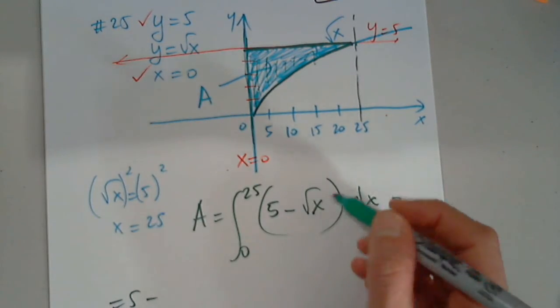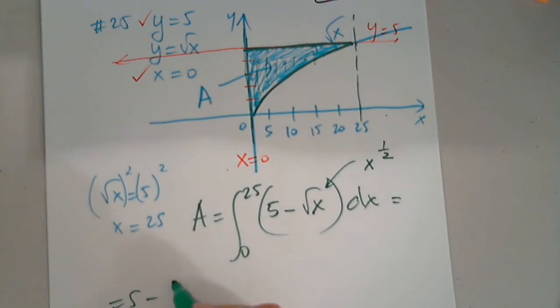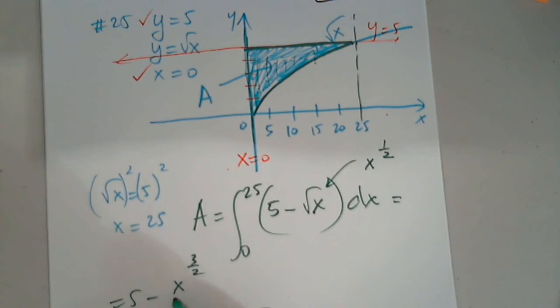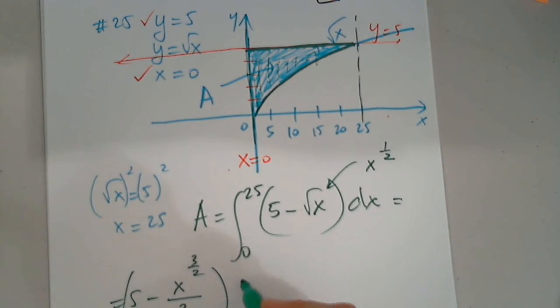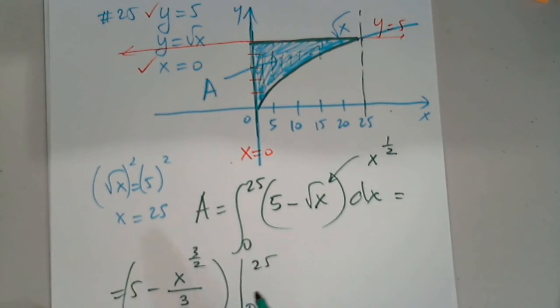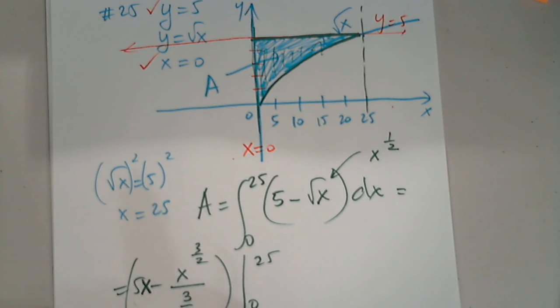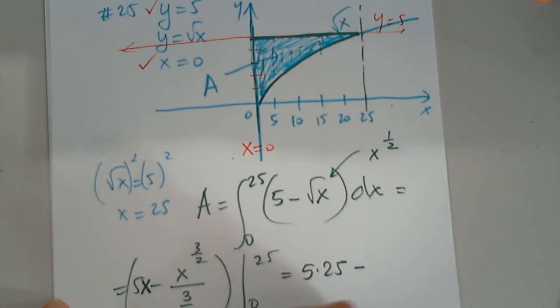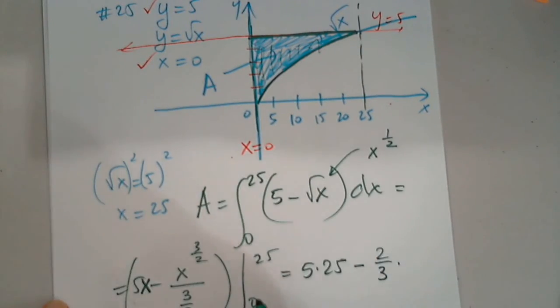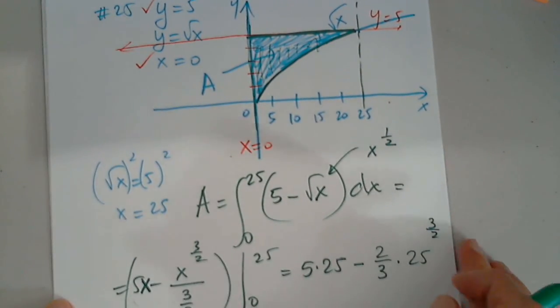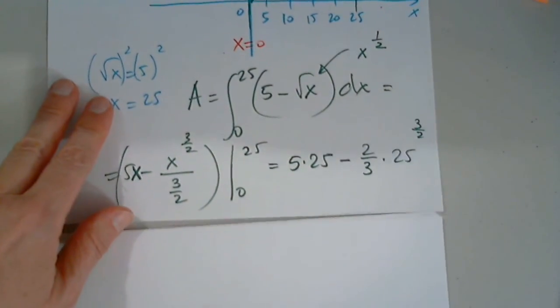It's between 0 and 25 from the upper function minus the lower function. So then this is 5 minus... Remember, this is X to 1 half. So minus X to 1 half plus 1. 3 halves over 3 halves. From 0 to 25. Yay! I don't have to plug in 0. I have to plug in 5. Oh, oh, oh! I don't have to plug in 0 because when I plug in 0, everything is 0. So 5X prime is 5. And when you differentiate this, you get the square of X. Okay, so I only need to plug in 25.